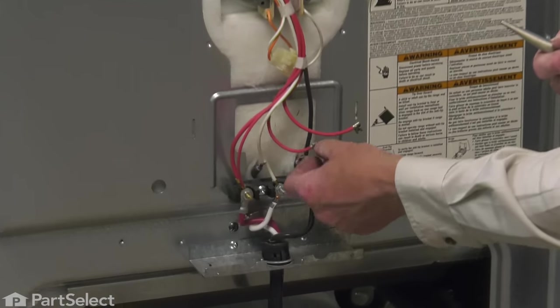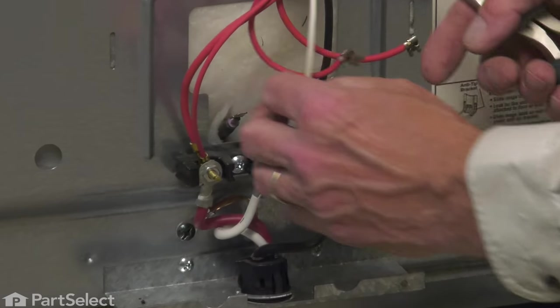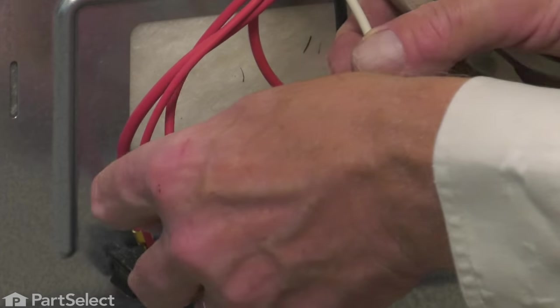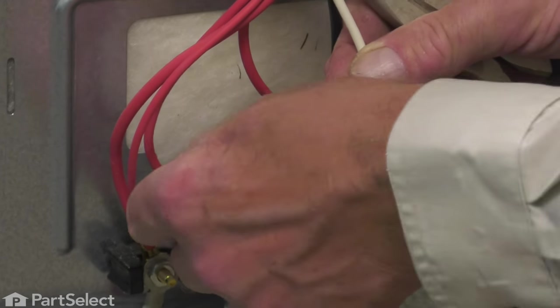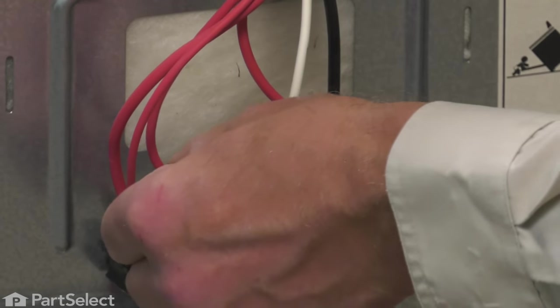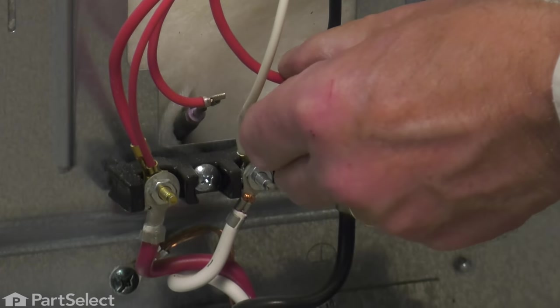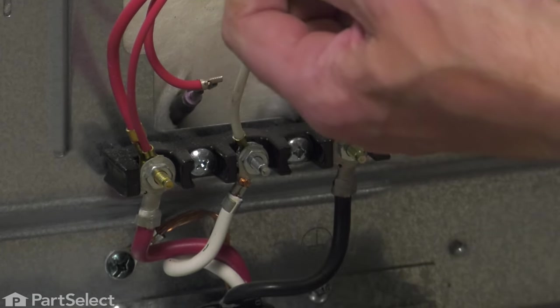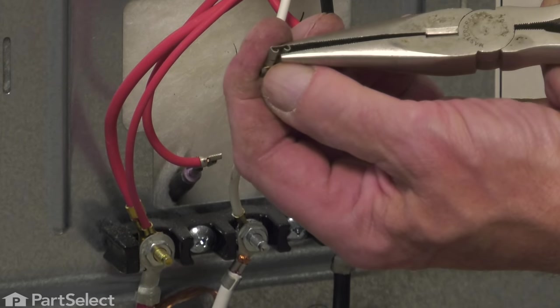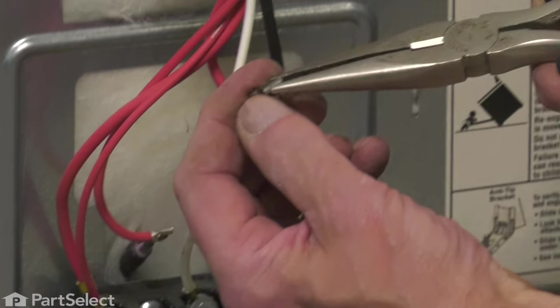Next, we'll reattach those wires to the element terminals. It's important that they fit on there nice and tight. If they're the least bit loose, just take a pair of needle nose pliers and gently crimp those.